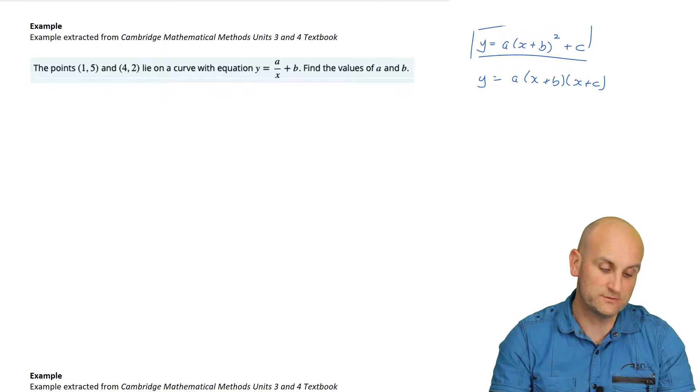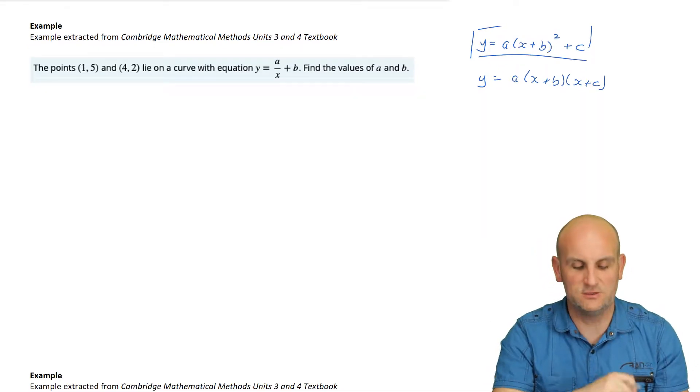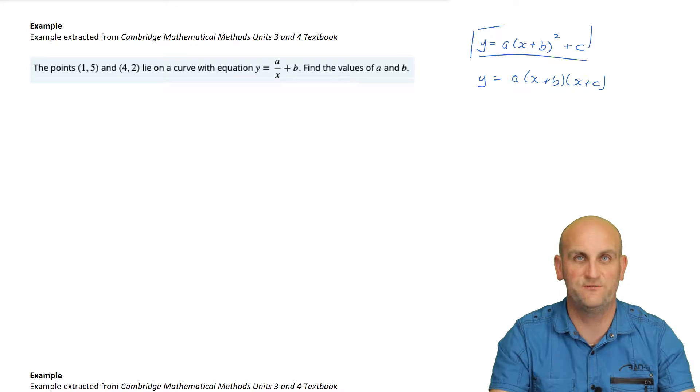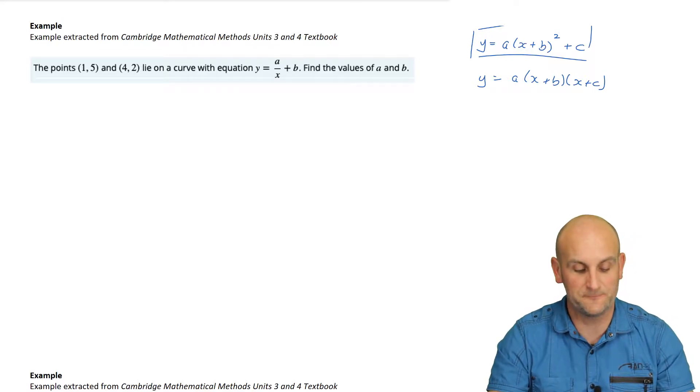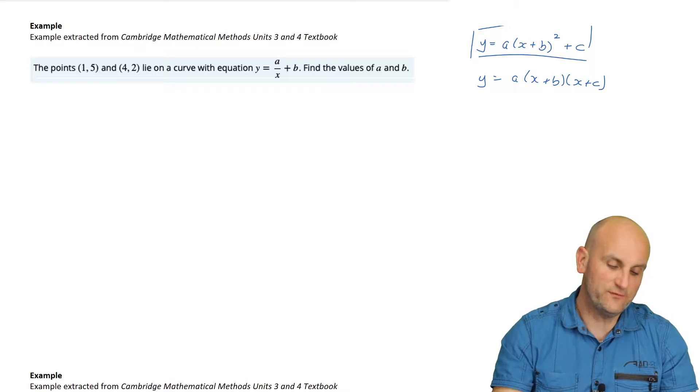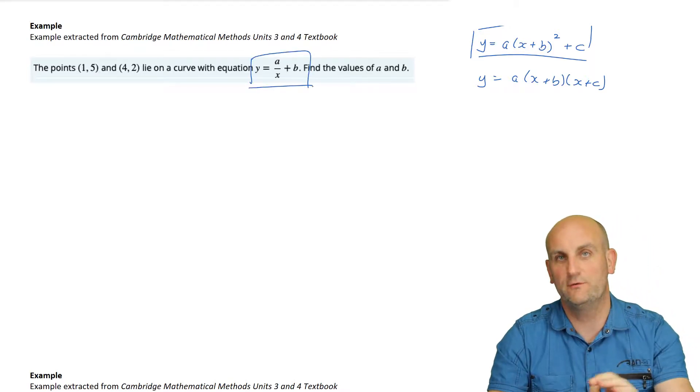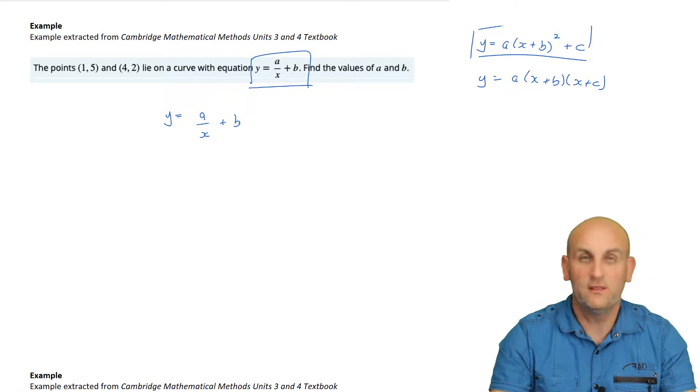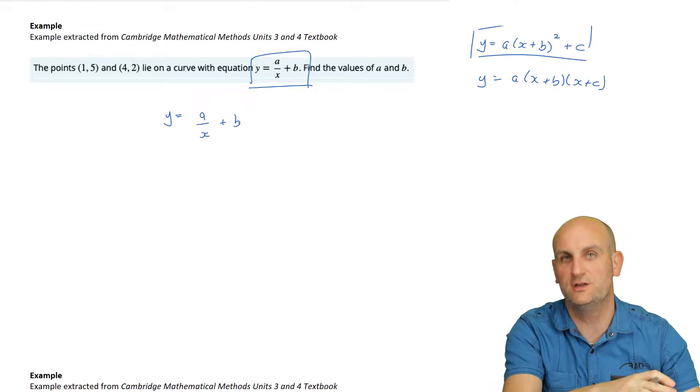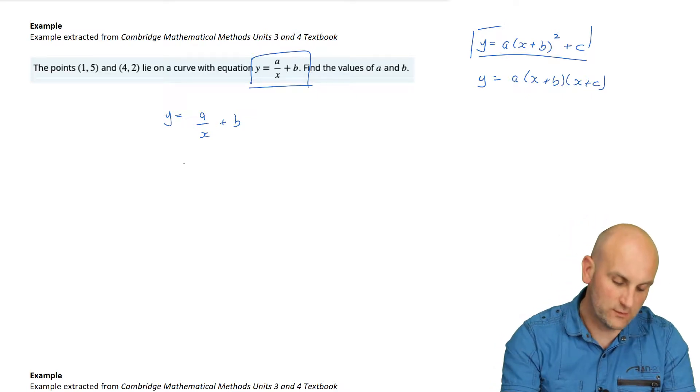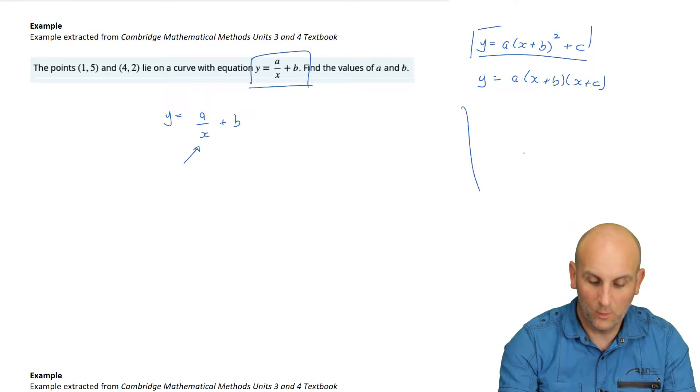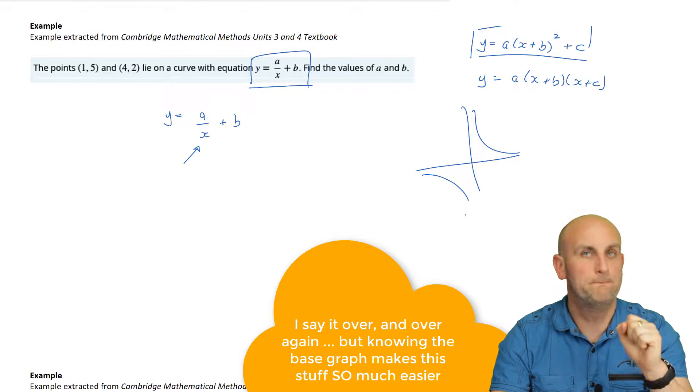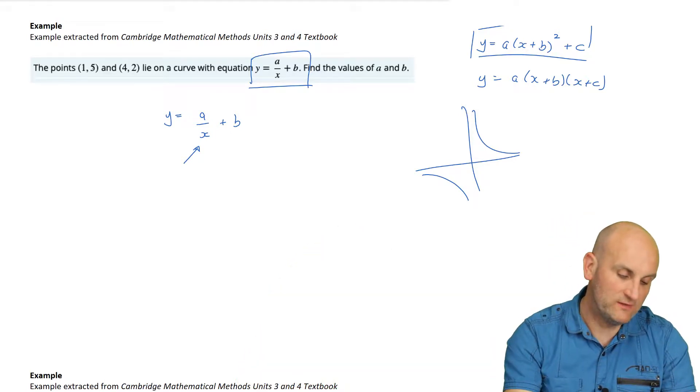Another form might be y equals a(x plus b)(x plus c). For example, that's another form of a quadratic equation. But the point of it is, if we give you the general form and some information, you should be able to go back and get the actual equation of the curve. And the best way to explain this, believe it or not, is through examples. Now, these have been taken from the Cambridge Mathematical Methods Units 3 and 4 textbook. If you have no idea what that means, and you're in India, or you're in America, or in the United Kingdom, don't worry about it. It's fine. Great textbook series with lots of examples. But what they're basically saying is, you've been given some information, and the biggest thing you need to know is the general form of that equation.